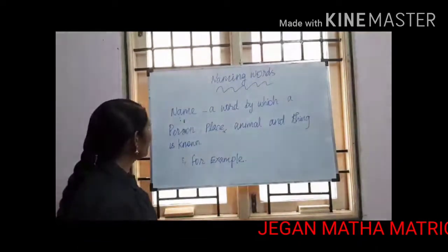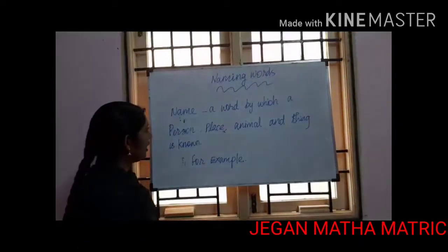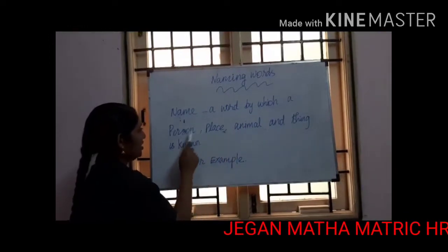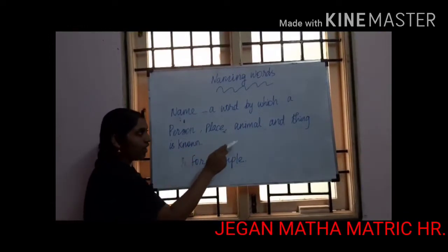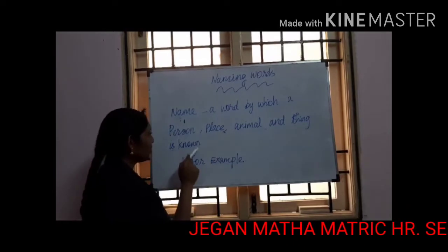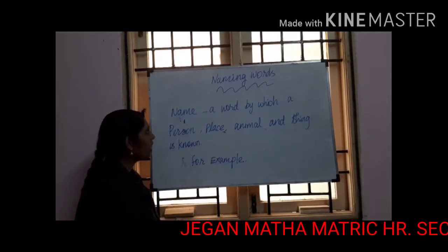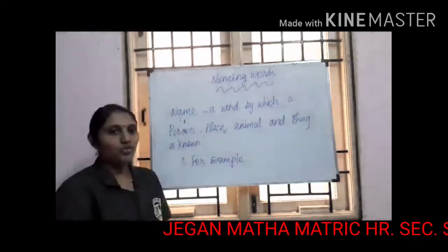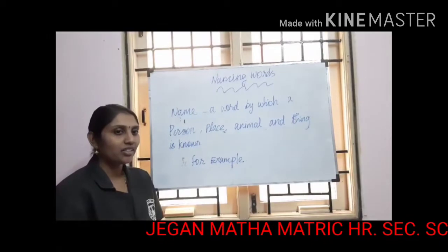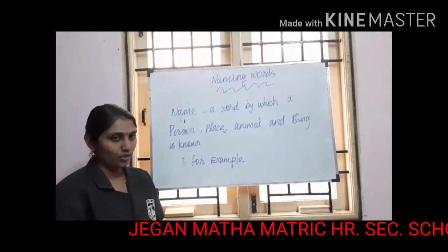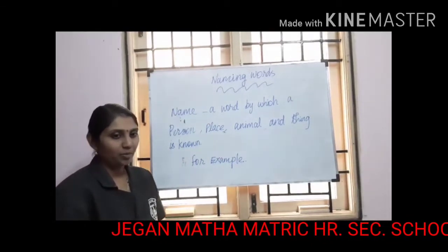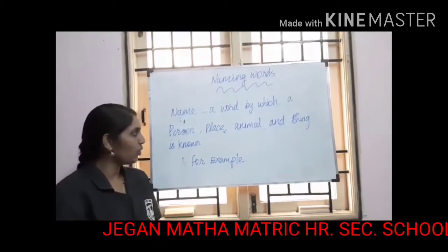Okay children, a word by which a person, place, animals, and things is known is called a naming word. A word by which a person, place, animals, and things is known is called a naming word.